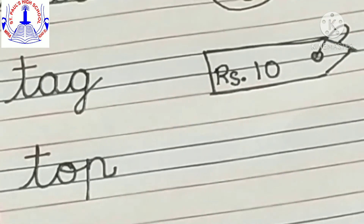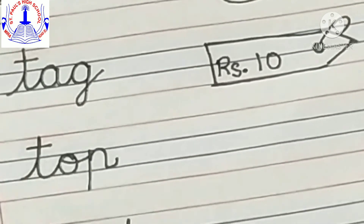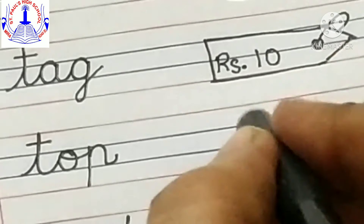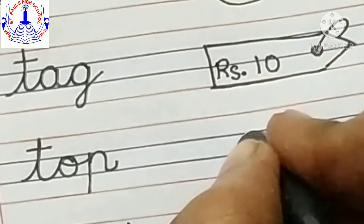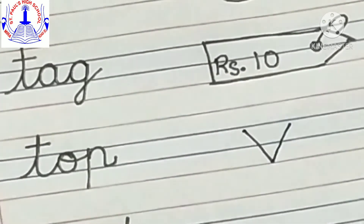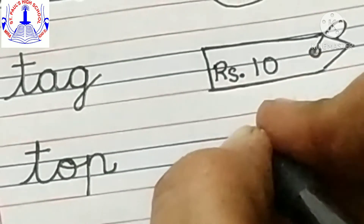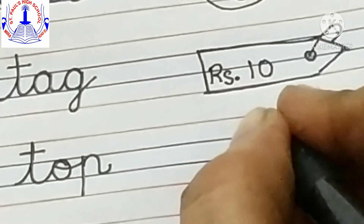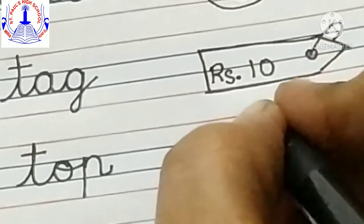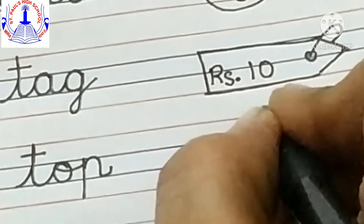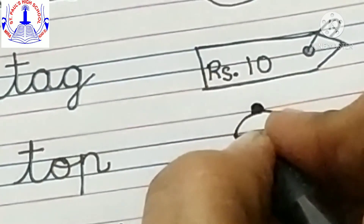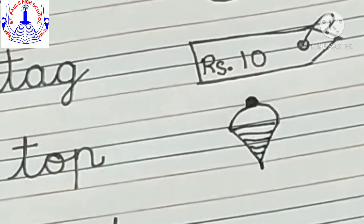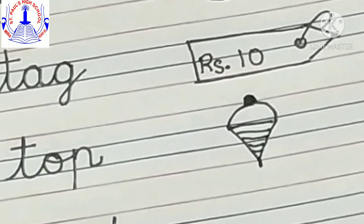Now let's move ahead. The next word is top — T-O-P, top. Now how to make a top: make a V shape this way, now join it, now make a curve on top — a bounce — this way. On top you can put a dot this way. Now in this triangle you have to draw sleeping lines, and it has a point. That's a top — T-O-P, top, picture of top.